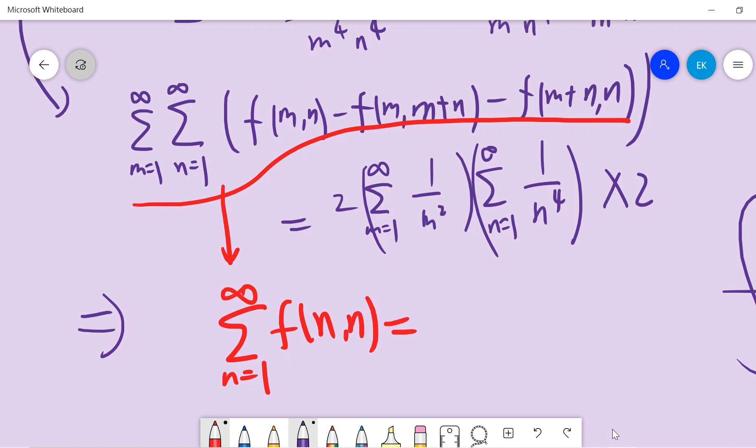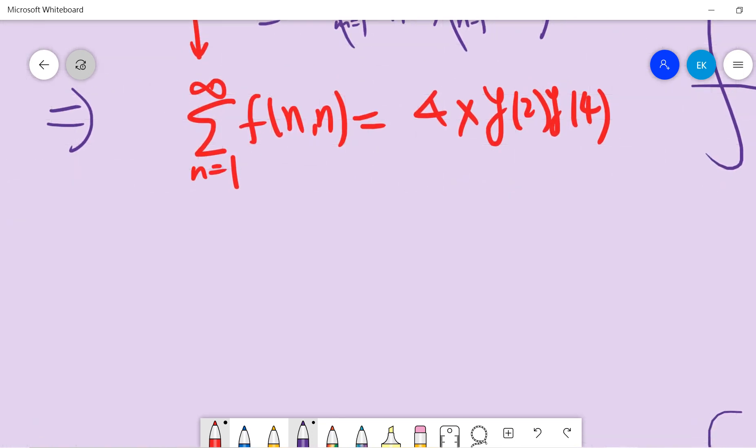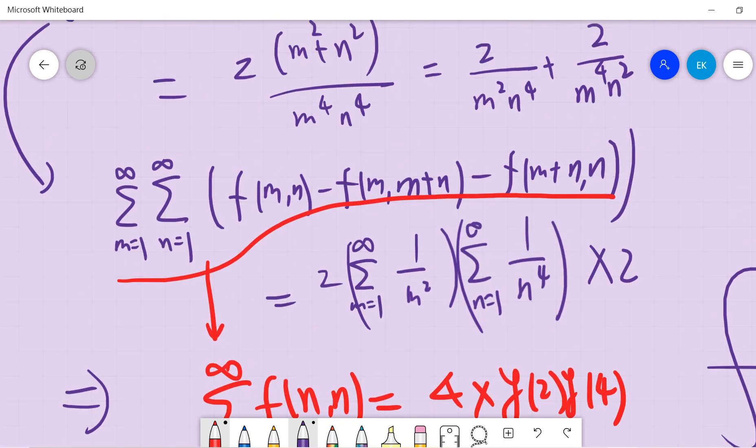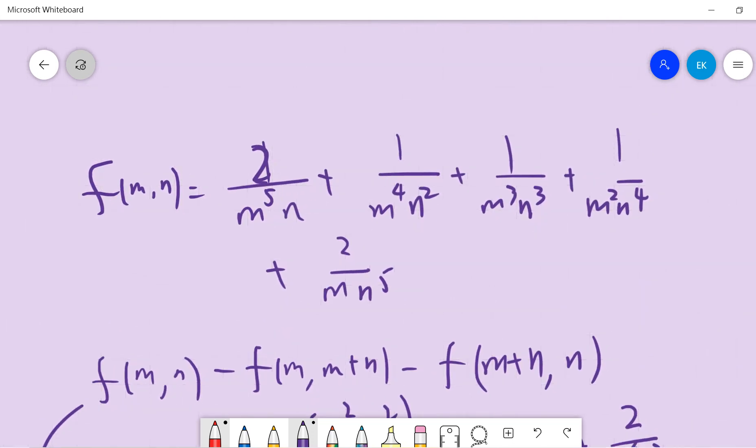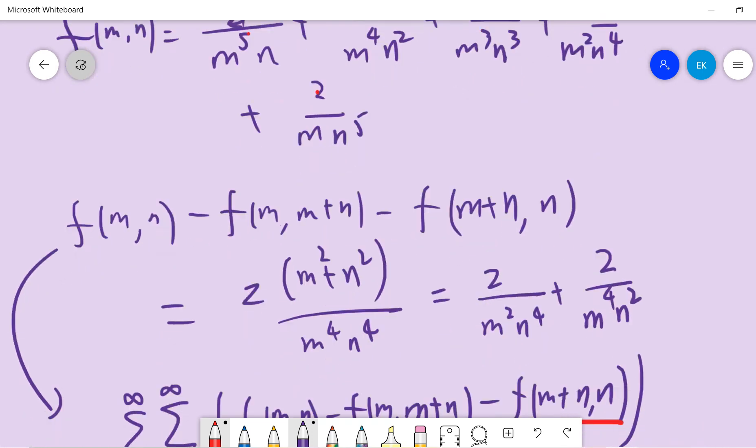Equals to 4 times zeta 2 and zeta 4. And what, so what is this term, right? So this term basically we can go back to see when m equals to n. So when m equals to n, all of these terms will be the same. Okay, so we have 2, 2, 1, 1, 1, so we have 7 over n to the 6 powers.